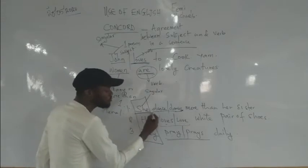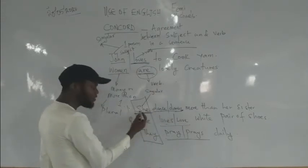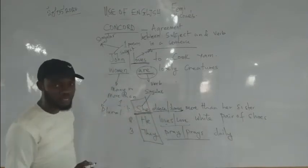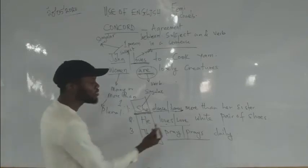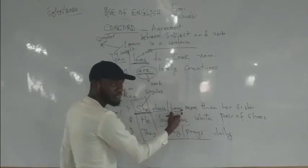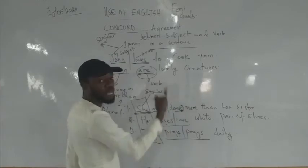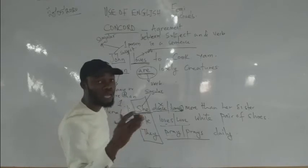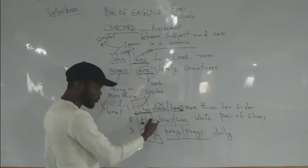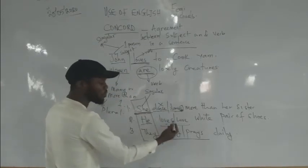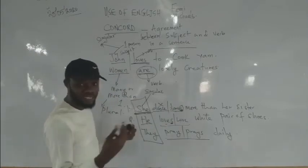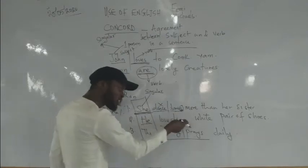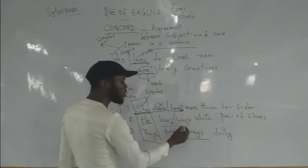When you have a subject that wants to perform the action — if the subject is singular, one, then the verb must be singular. How do you identify a singular verb? A singular verb always has S at the back, saying 'I am singular.' Plural verbs don't have S at the back. Singular verbs always carry S to show they are singular. 'Love' is plural — it does not carry S.